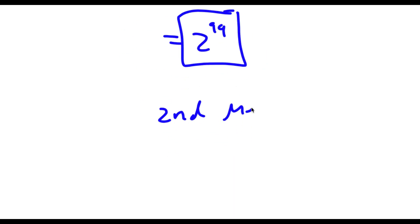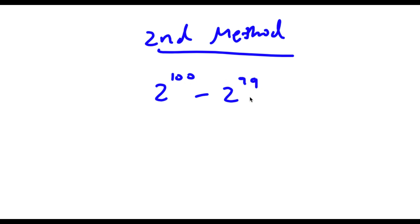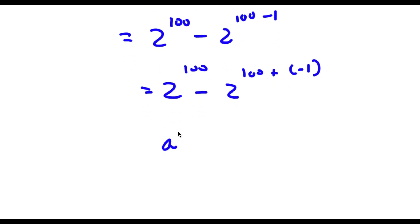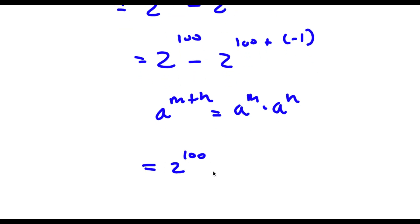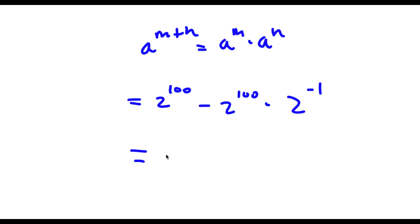I also have a second method. Starting again with 2 to the power of 100 minus 2 to the power of 99, instead of rewriting 100 as 99 plus 1, I rewrite 99 as 100 minus 1, which is the same as 100 plus negative 1. Applying the same exponent property, 2 to the power of 100 minus 1 becomes 2 to the power of 100 times 2 to the power of negative 1. Then I factor out 2 to the power of 100, leaving 2 to the power of 100 times 1 minus 2 to the power of negative 1.